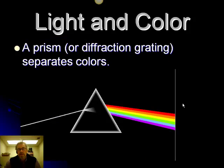When we see white light, what we're really seeing is all the colors mixed together. Our eyes don't have the ability to distinguish colors from each other, so they sort of add up, and our brain sees the sum of the colors that are available.